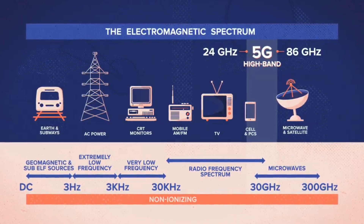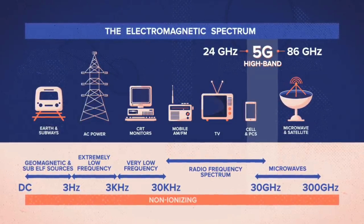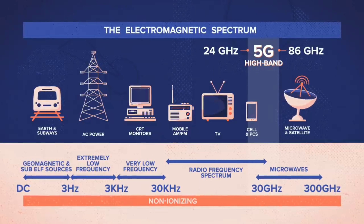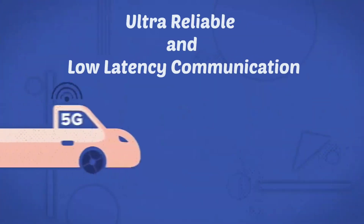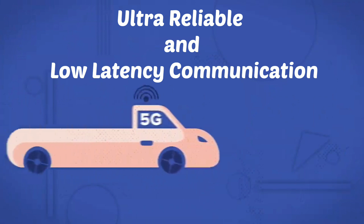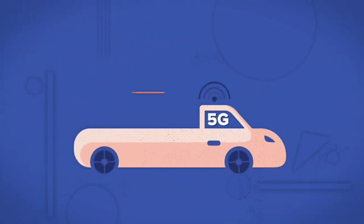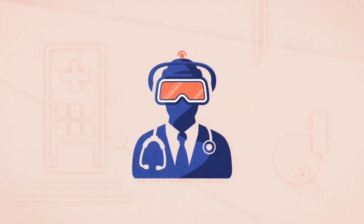Currently, the higher frequency comes at a higher cost and is deployed only where it is needed — in crowded urban settings, stadiums, convention centers, airports, etc. A type of 5G service called Ultra Reliable and Low Latency Communication can be used where data needs to be transmitted without loss or interruption.